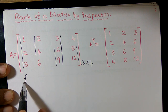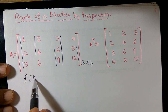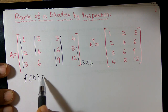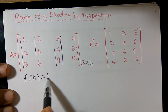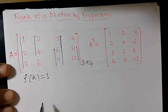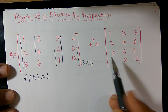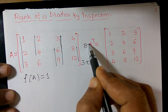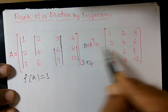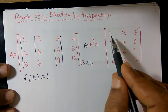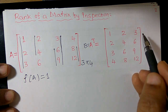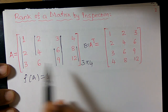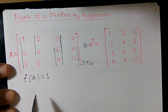Therefore, the rank of this matrix is 1. You can also consider matrix B which is equal to 1, 2, 3 — it is the transpose of this matrix.